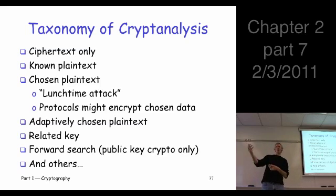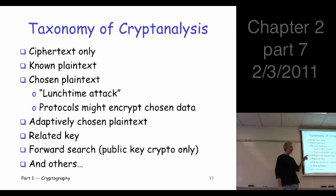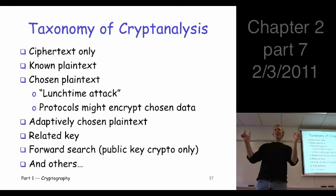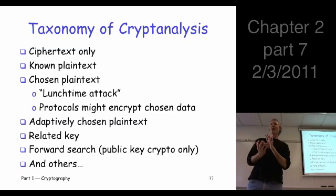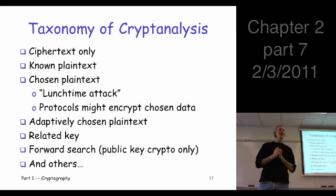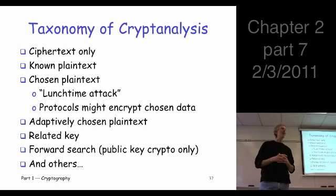This is the next step up — adaptive chosen plaintext, where Trudy can choose one plaintext, see the ciphertext, then choose the next one based on that, and so on. There's also related key attacks — where two messages are encrypted with different but specially related keys. That sounds far-fetched, but WEP, the wireless encryption protocol, has an attack based exactly on that premise, and you can actually break the keys.